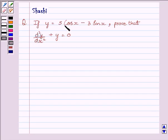If y is equal to 5 multiplied by cos x minus 3 multiplied by sin x, prove that d square y upon dx square plus y is equal to 0.